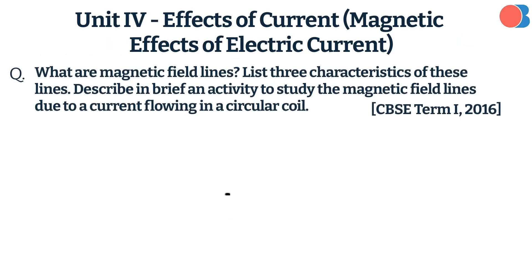What are magnetic field lines? List three characteristics of these lines. Describe in brief an activity to study the magnetic field lines due to a current flowing in a circular coil.